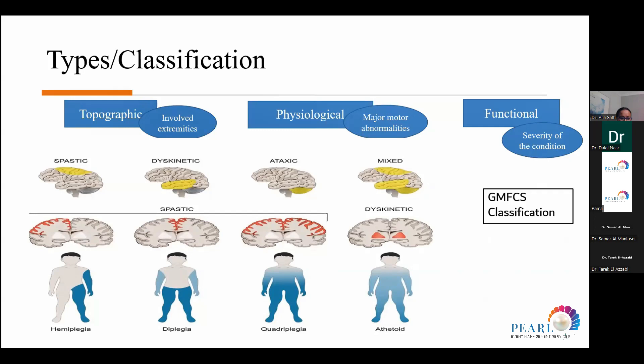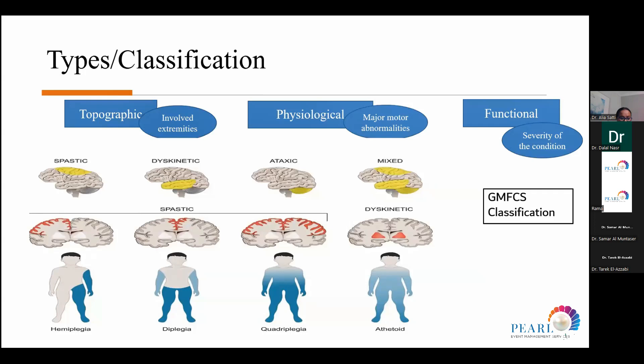In terms of severity, we assess function using the gross motor function classification score, which we will discuss in coming slides. Because spasticity is the majority — around 85% of children with cerebral palsy have spasticity and hypertonia — the coming slides will focus on spasticity.